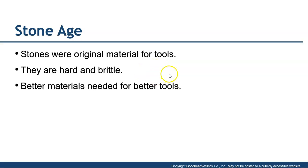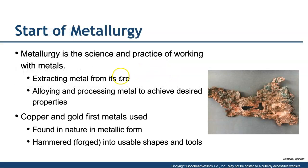As we get into the start of metallurgy, the main thing to understand is that we are basically extracting metals from the earth — from what we call ore. Alloying is the process of taking different types of metal and combining them together to achieve desired properties. That's really what the science and practice of metallurgy is all about: providing different combinations of these different types of metals.